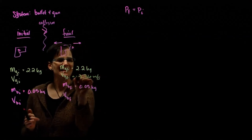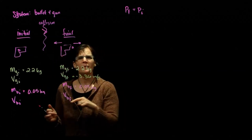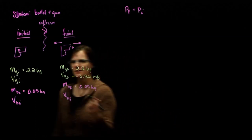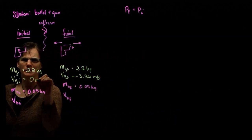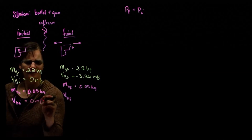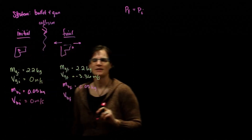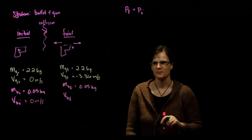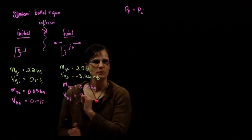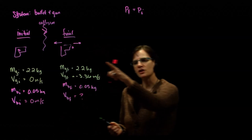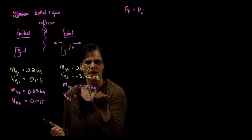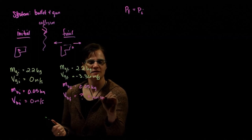As drawn, the recoil is in the negative direction. In the initial condition, they're just sitting there, so the initial velocity for the gun is zero and the initial velocity of the bullet is also zero — our initial velocities are both zero. We want to know how fast the bullet moves off. Based on the picture, we expect it to be to the right, so positive and non-zero — that's our prediction.